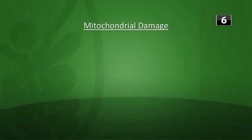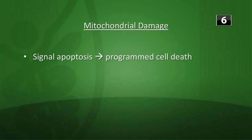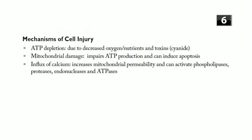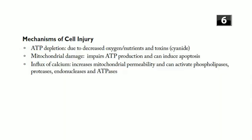Mitochondria house proteins capable of activating apoptotic pathways — cytochrome c can activate caspases in the cytosol. Mitochondria can be damaged by increased cytosolic calcium, reactive oxygen species, oxygen deprivation, and mutations in mitochondrial genes. Calcium influx and loss of calcium homeostasis — from ischemia or certain toxins — increase mitochondrial permeability transition pores and impair ATP production. Increased calcium also activates phospholipases, proteases, endonucleases, and ATPases, all of which negatively impact cellular status.